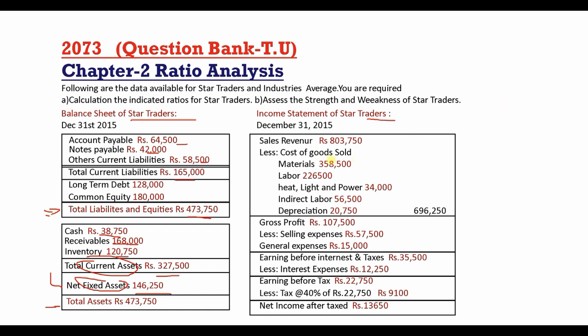The income statement of Star Traders is as of 31st December 2015. Total sales $8,37,500. Cost of goods sold includes material, labor, heat, light and power, indirect labor, and depreciation — totaling $6,96,250.